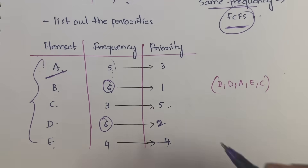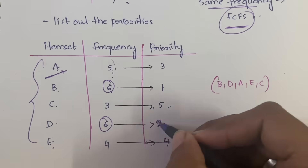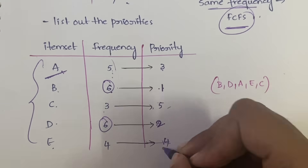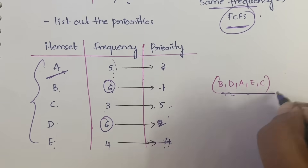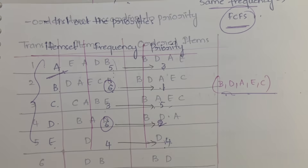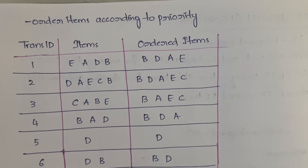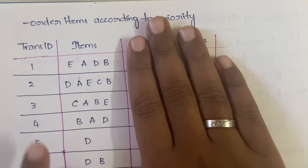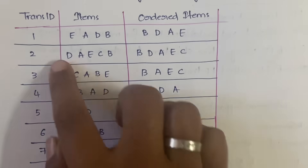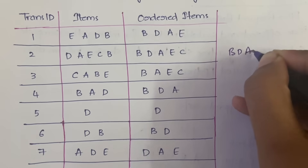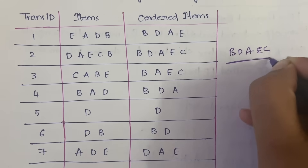Next, five is only A alone, so directly priority 3. Then E gets priority 4 and C gets priority 5. So in the order of priority it is: B, D, A, E, C — that is what we have written. The next step is to order the elements according to their priority.